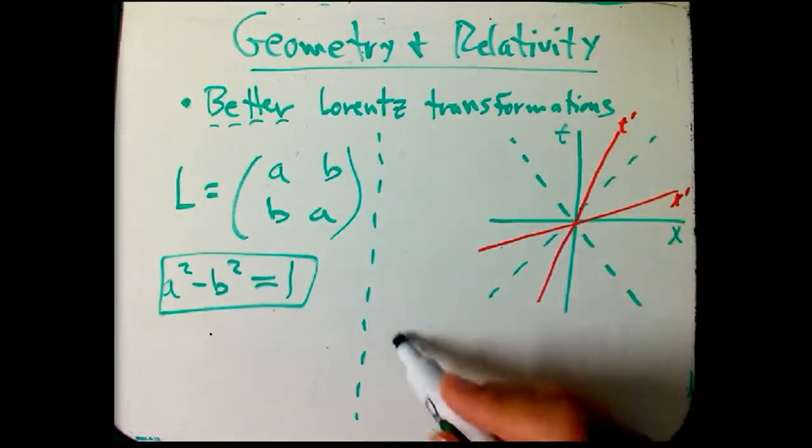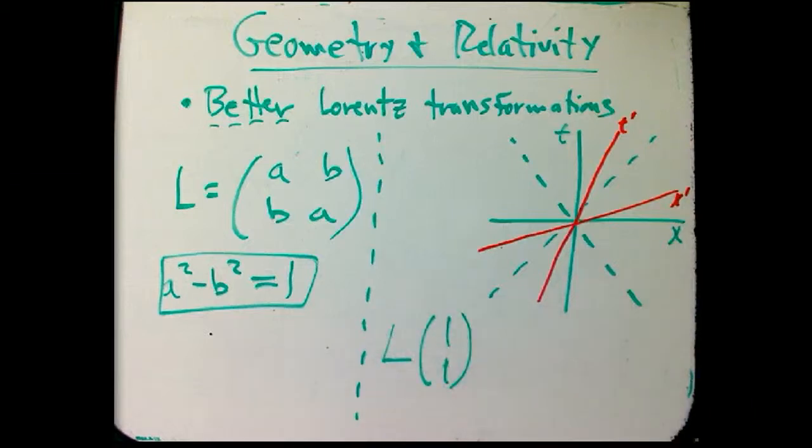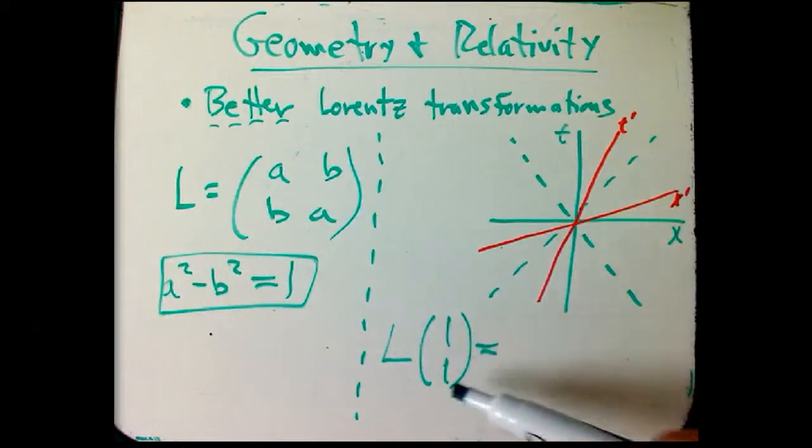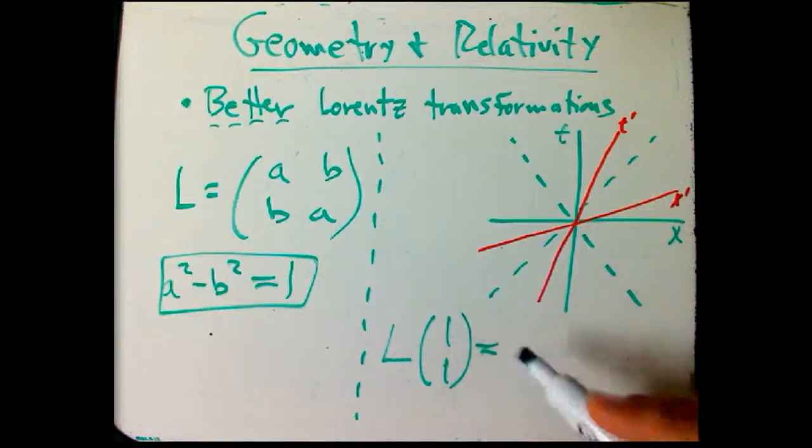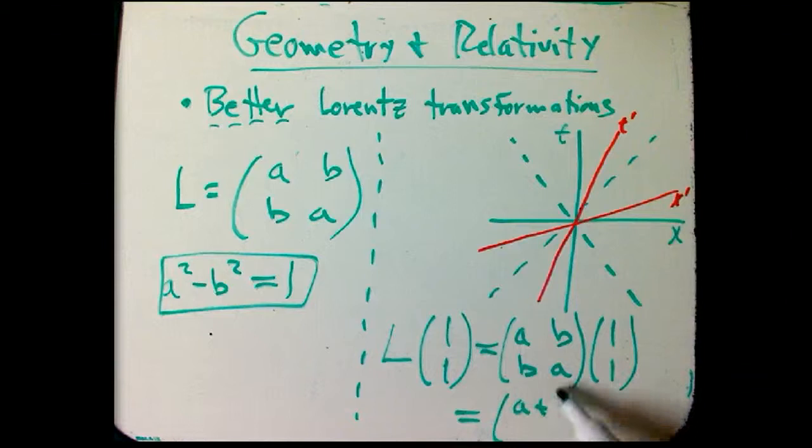So that means that if I take a Lorentz transformation and I hit it with, say, the null vector 1, 1, that had better be a null vector again. Even according to x prime and t prime, it had better have the form something and itself. We can check that. We know it has this form a, b, b, a. And indeed, that's just a plus b, b plus a. So that's a check that they are going to agree on the null cone.